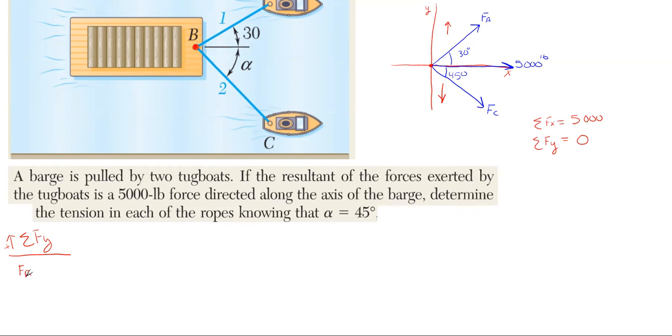So essentially what we have is F_A, and it will be sine of that 30 degree angle. Because the y component is opposite this angle, the angle is touching the x, so the y will be with sine, the x will be with cosine.